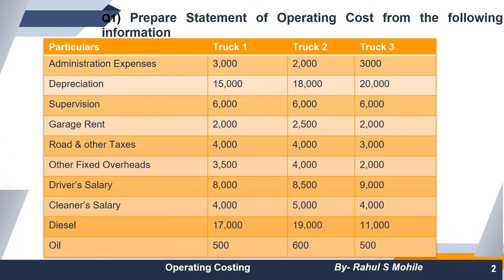Looking at the question: prepare a statement of operating cost from the following information. Here we have information for three trucks — Truck 1, Truck 2, and Truck 3 — with many points given including administration expenses, depreciation, supervision, garage rent, road and other taxes. We have to prepare this operating cost statement.